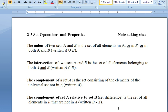First of all for our definitions. The union of two sets A and B is a set of all elements in A or in B or possibly in both. And we use the U shape to indicate union.